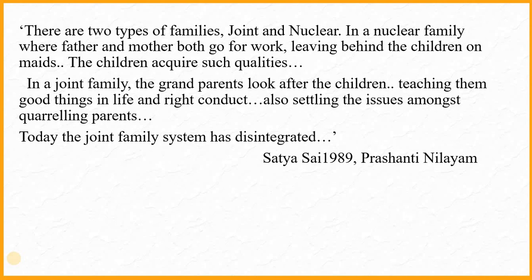Here is a quote from Satya Sai Baba, when Swami spoke in 1989 at Prasanthi Nilayam. He said there are two types of families — joint and nuclear. In a nuclear family where both father and mother go to work leaving behind the children, the children acquire certain qualities. In a joint family, the grandparents look after the children, teaching them good things in life and right conduct, and settling issues amongst quarrelling parents if there are any. Today the joint family system has disintegrated. With this we end the lesson. Thank you and Om Sai Ram.